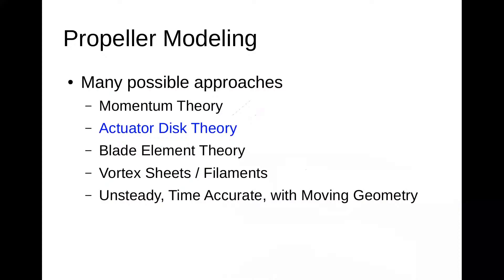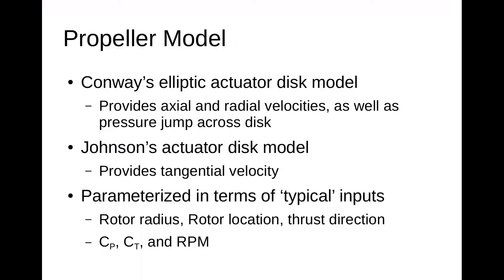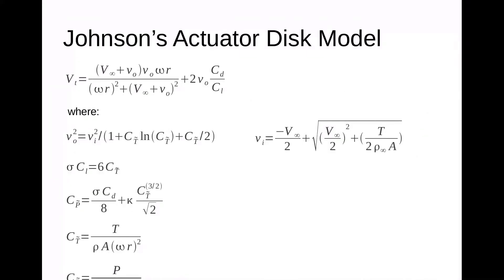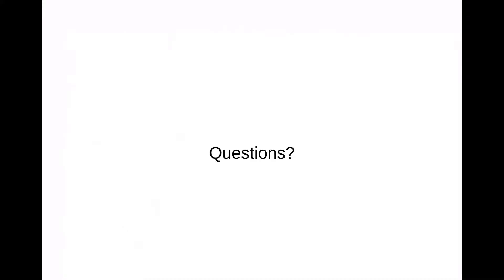For the actuator disc propeller model, there are a whole bunch of different approaches and we chose actuator disc theory in VSPro. The propeller model uses Conway's elliptic actuator disc model, tied in with a portion of Johnson's actuator disc model to provide the tangential velocity. Conway's provides the axial and radial velocity as well as the pressure jump across the disc. We parameterize this in terms of typical engineering inputs: rotor radius, location, thrust direction, power and thrust coefficients, and RPM.